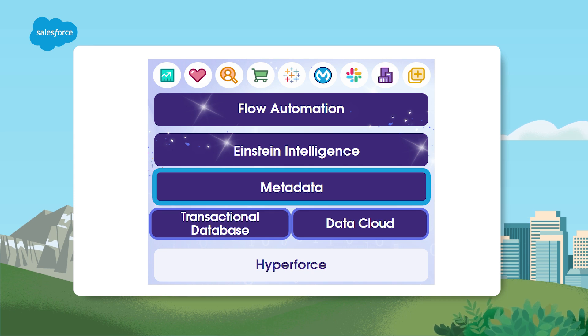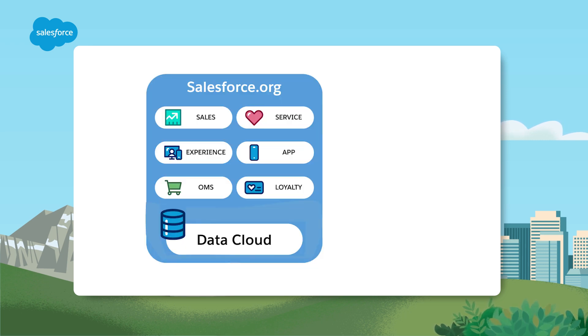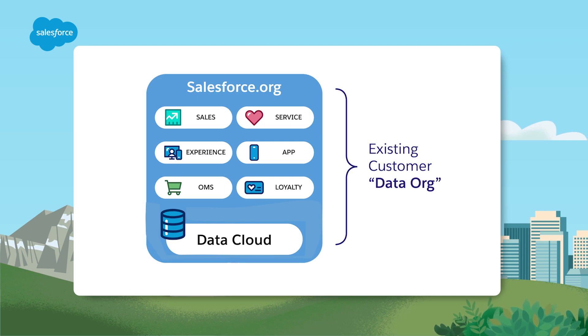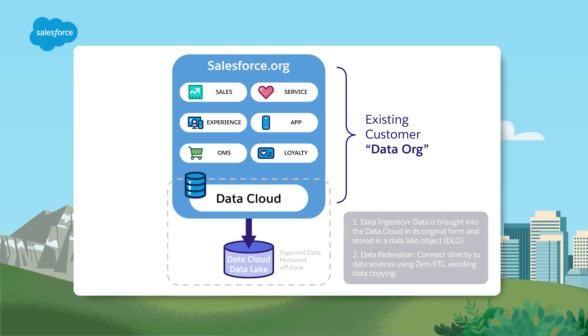Before you set up Data Cloud it's helpful to consider your data architecture and data residency requirements. Your options are to provision Data Cloud in an existing Salesforce org or to provision a new separate home org. Provisioning Data Cloud in an existing org makes sense when your company has a single line of business, you have a single Salesforce org, and your primary use cases require out-of-the-box Data Cloud Lightning web components or LWCs and search capabilities for service agents. Keep in mind that a single Data Cloud instance can still connect to multiple different Salesforce core orgs if you need to.